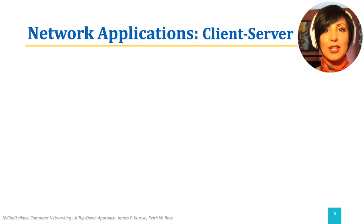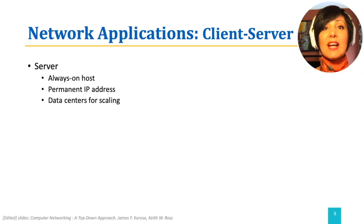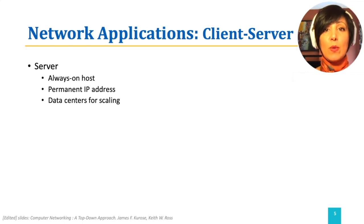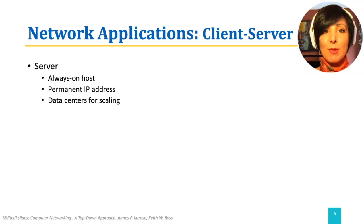In the client-server application architecture, one of the end systems which is called the server is always on, so that it can receive requests from the clients and respond to them. It needs to have a permanent known address so clients know how to contact it when they need services. A permanent IP address is used for this purpose, which we will discuss in the network layer discussions. With the number of requests from different clients increasing, one end system may not be able to respond to all of their requests. In this situation, data centers running virtual servers over many physical resources could be utilized to respond to the increased requests.